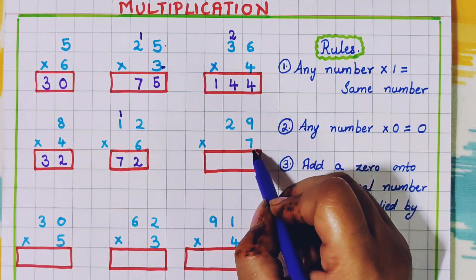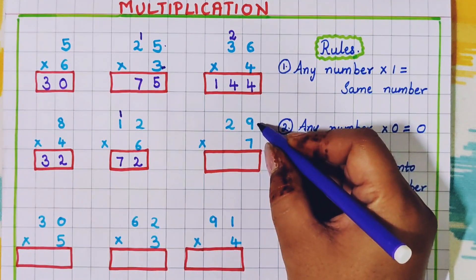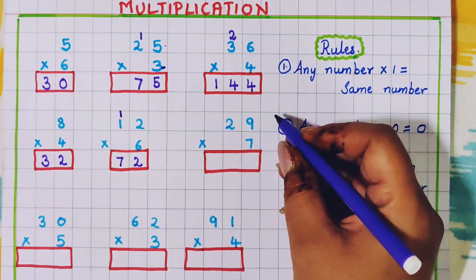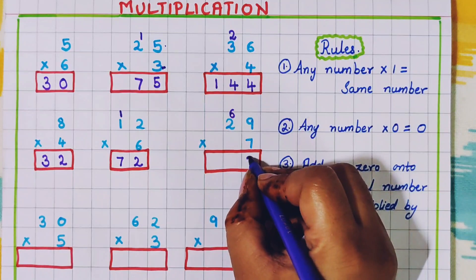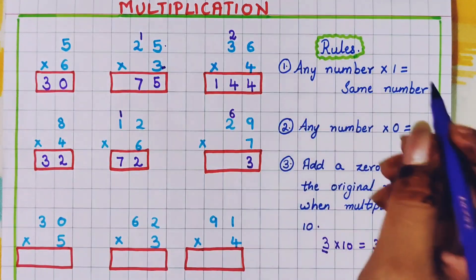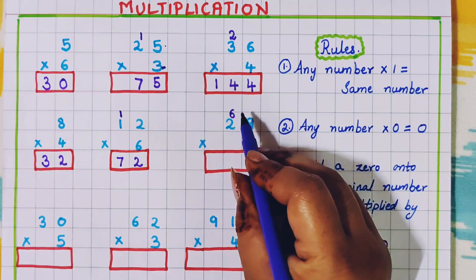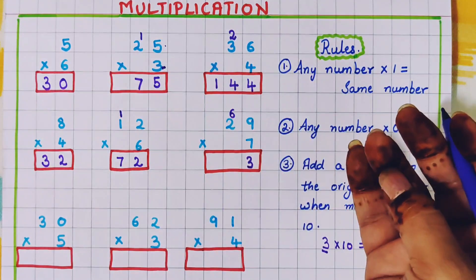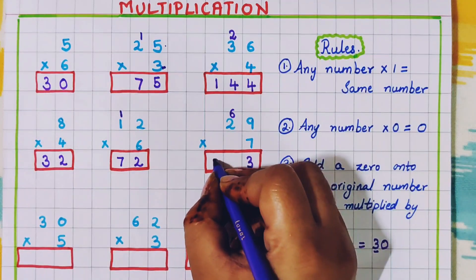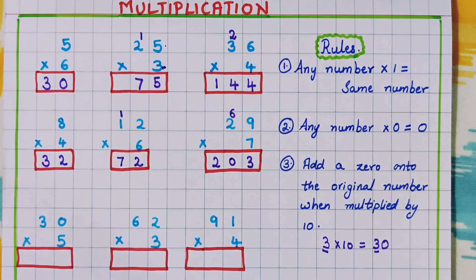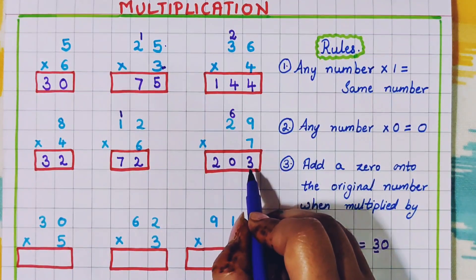Now let's do one more problem: 29 into 7. 7 9s are 63, so I write carry 6 and write 3 in the 1s place. Then 7 2s are 14; now 14 plus carry 6 is 20. So here I will write 2, 0 — 20. So 29 into 7 is 203.